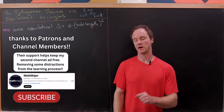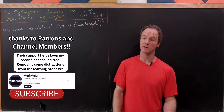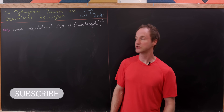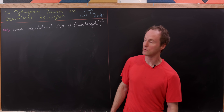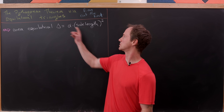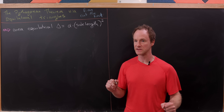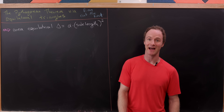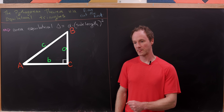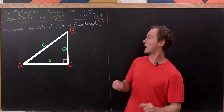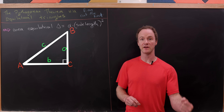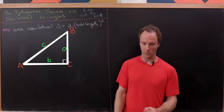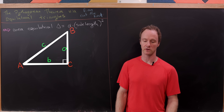Thanks for sticking around this long. If you're enjoying the video, make sure to give it a thumbs up, and if you're not yet subscribed, consider subscribing — it really helps. So we just argued that the area of an equilateral triangle equals alpha, some constant, times the side length squared. Now we'll launch into our proof of the Pythagorean theorem using this partial area formula.